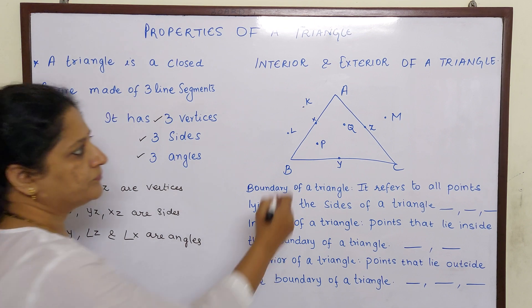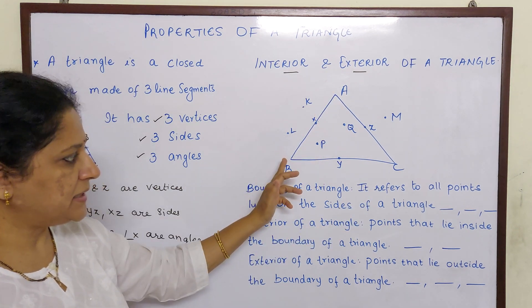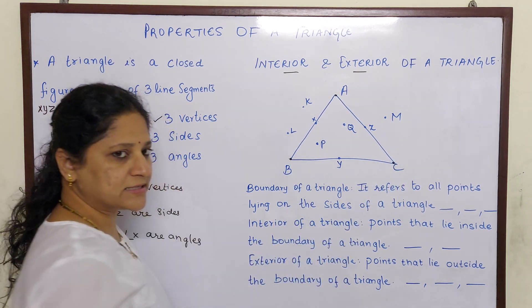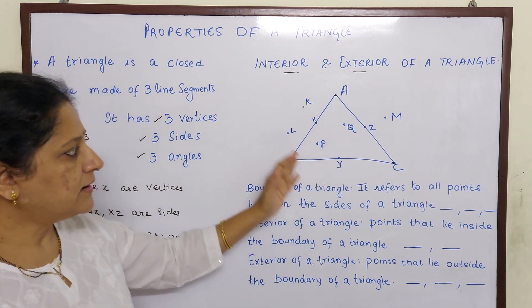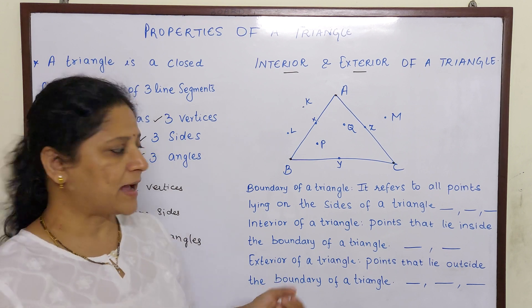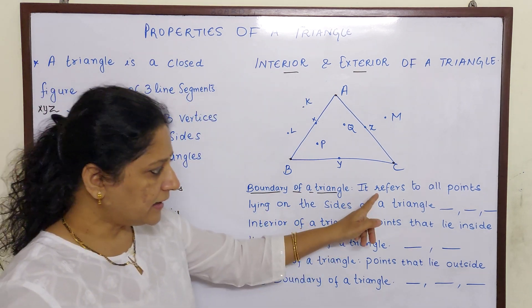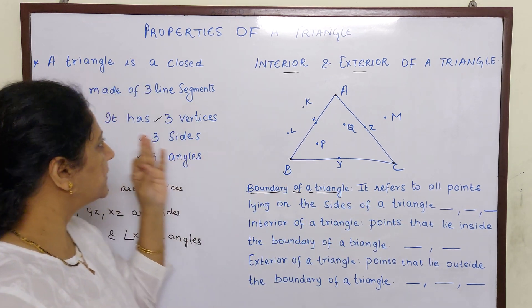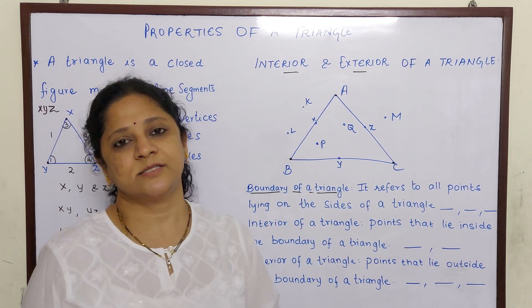Hope you understood, children, how in a triangle you have three vertices, three sides and three angles. Now let us go to the next topic: interior and exterior of a triangle. You can see there is a triangle ABC with A, B, C as vertices. I have placed some points inside the triangle, some points on the triangle, and some points on the exterior. So let us understand what are the terms — the boundary of a triangle refers to all points lying on the sides of a triangle.